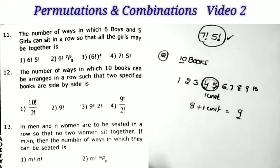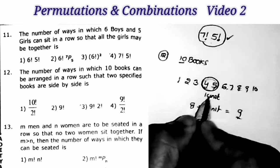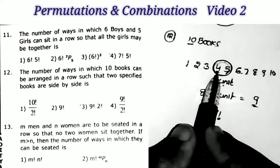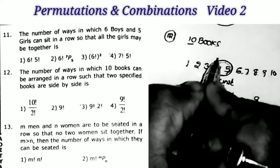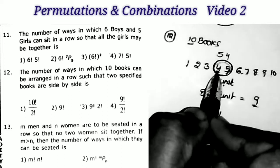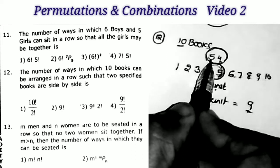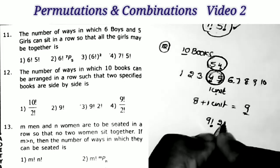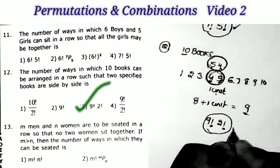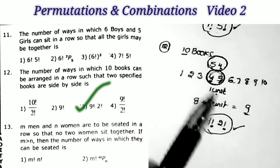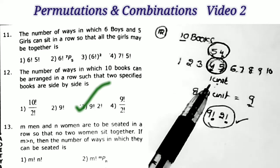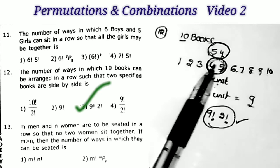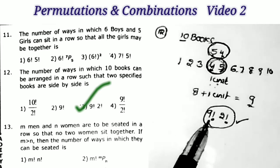We treat the two books as one unit: eight plus one equals nine. These nine can be arranged in nine factorial ways. We can also rearrange the two books among themselves in two factorial ways — the order can be book A then B, or B then A; in both cases they are side by side. Therefore the answer is nine factorial into two factorial.